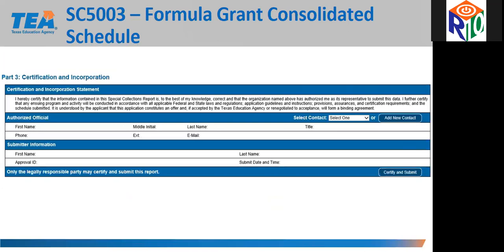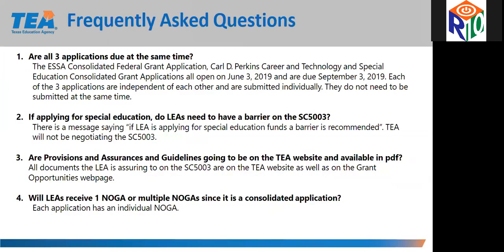Part 3 of the SC 5003 is for certification and submittal. Remember that this schedule must be certified and submitted prior to any of the LEA's available grants opening. There is only one SC 5003 per LEA. After submitting, should there be a need to change this schedule, the LEA can make an amendment. Slides 23 through 25 are answers to frequently asked questions. I want to call attention to question 2 as a reminder regarding equitable access and participation for special education. The message on the SC 5003 indicating that a barrier for special ed is recommended will be removed, and the LEA is to keep the strategies to address all barriers at the local level.